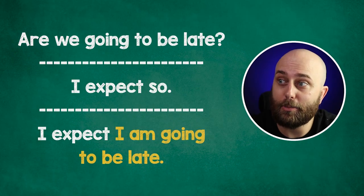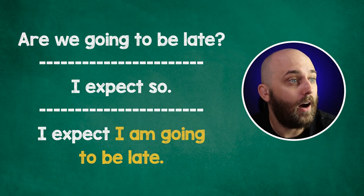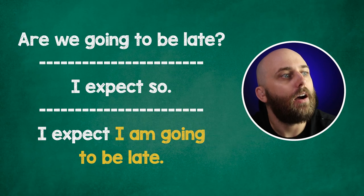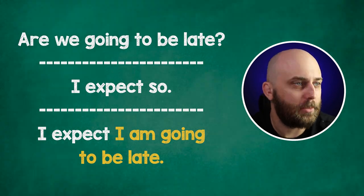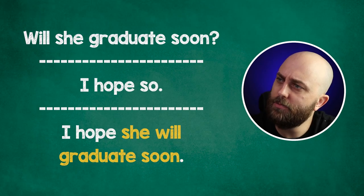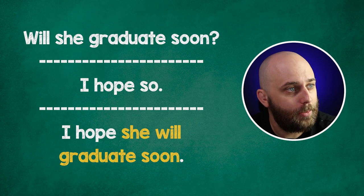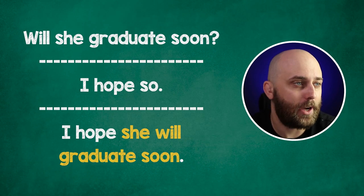However, if I were to create phrases using that verb that pairs with 'so,' I would use an object clause. For example: 'Are you going to be late?' — 'I expect so' — 'I expect I am going to be late.' 'Will she graduate soon?' — 'I hope so' — 'I hope she will graduate soon.'